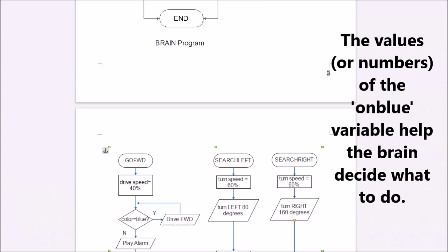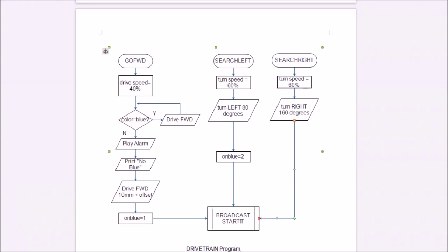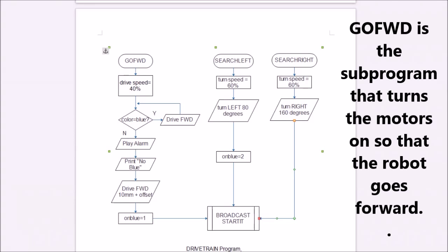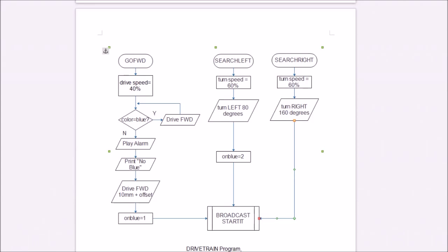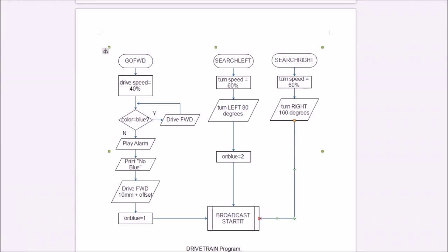So let's take a look at the drive train program. If the brain tells the robot to go forward, then notice the drive speed is set to 40%. This is on the left hand side. And then there's another question being asked or a decision that has to be made. It keeps checking, is the color still blue? Is the color of the line that the robot is following still blue? Does the color sensor still detect blue? If the answer is yes, then you keep driving forward.